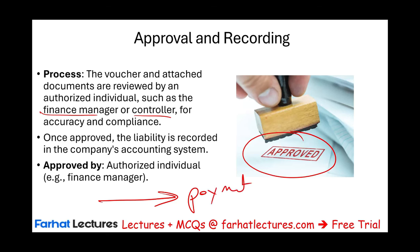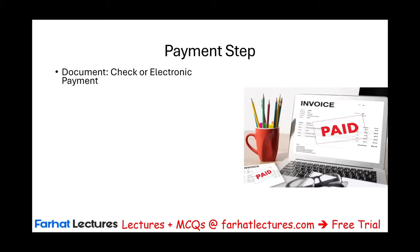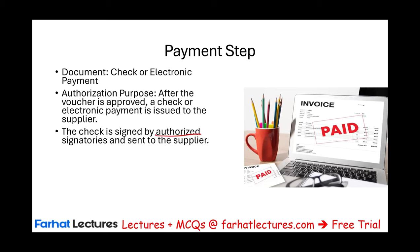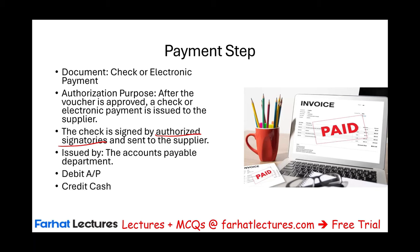Once approved, we submit the voucher for payment. A check or electronic payment is issued to the supplier. The check is signed by an authorized individual — maybe with two signatures required — and sent to the supplier. The accounting department then records the entry: debit accounts payable, credit cash, because we made the payment.